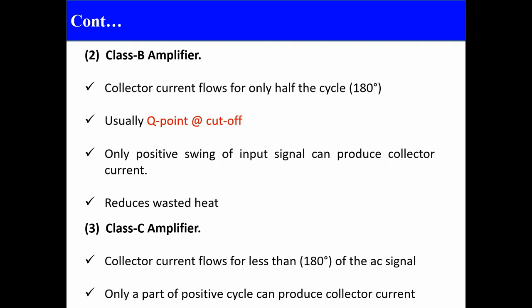In Class C, the collector current flows for less than 180 degrees of the AC cycle — meaning only part of the half cycle. So only part of the positive cycle can produce collector current. In Class B, collector current flows for 180 degrees, while in Class C it flows for less than 180 degrees. There is also Class AB, where the Q point is located between the locations of Class A and Class B, which is mentioned in the next slide.